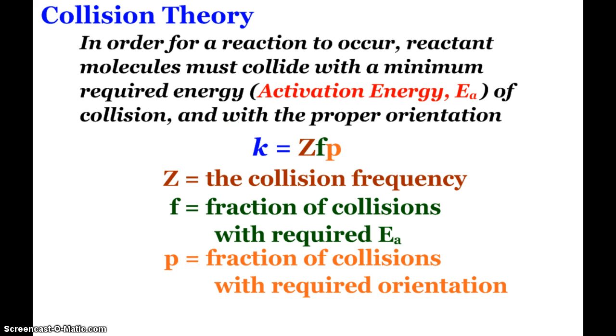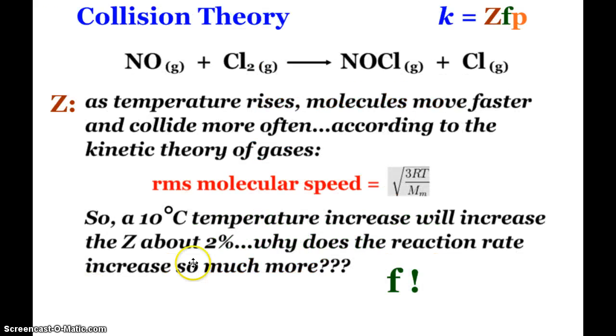Let's dissect this further. In collision theory, k equals ZFP. Here we have a reaction: nitrogen monoxide reacting with chlorine. For Z, as temperature rises, molecules move faster and collide more often.